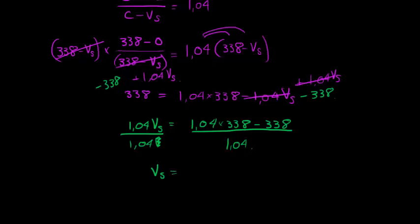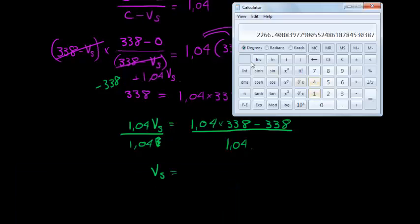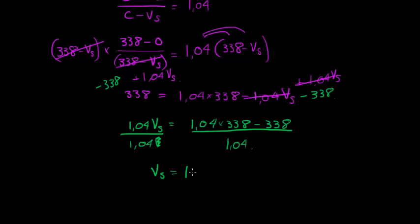So in the numerator, we have 1.04 times 338 minus 338. That's everything in the numerator. And it simplifies to 13.52. Now that's actually 4% of 338. And that must be divided by 1.04. And that gives me 13. The velocity of this source is 13. And we're working with meters per second.